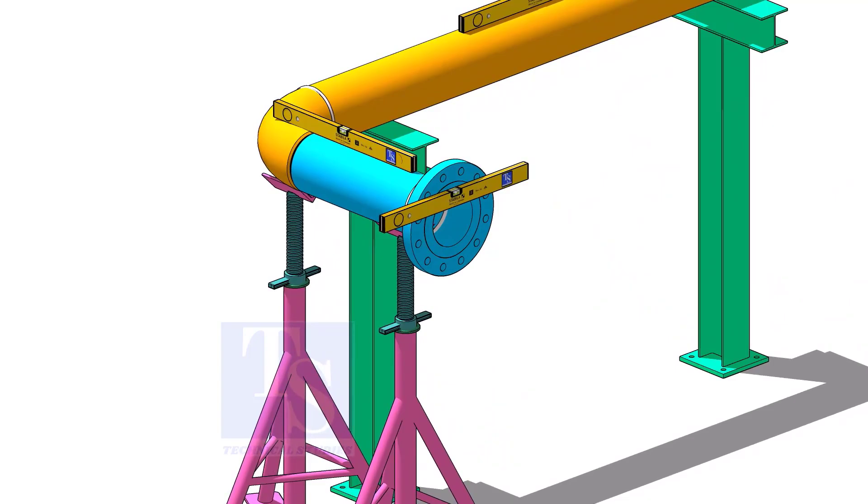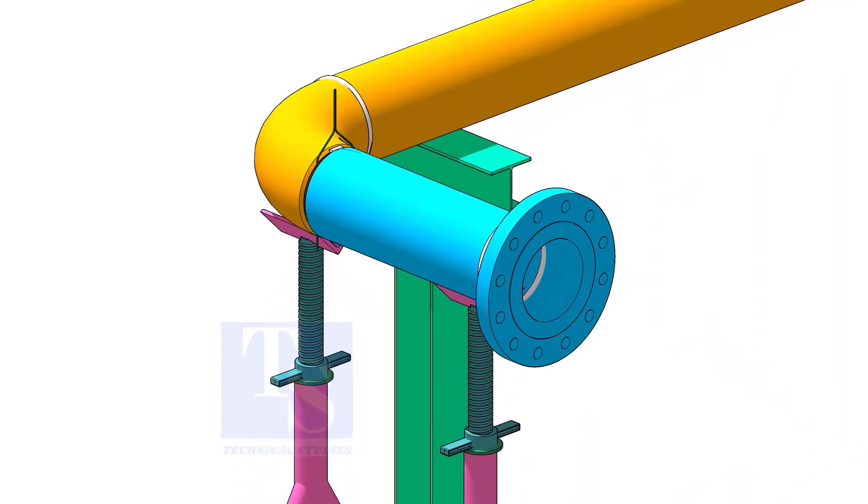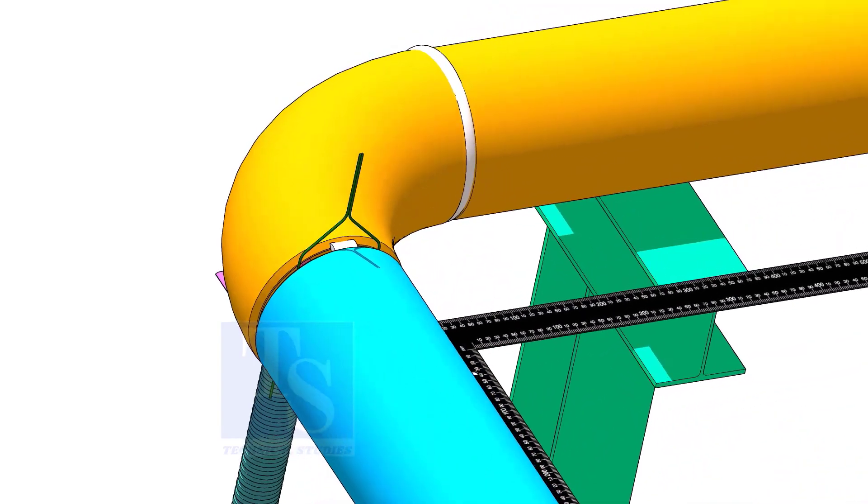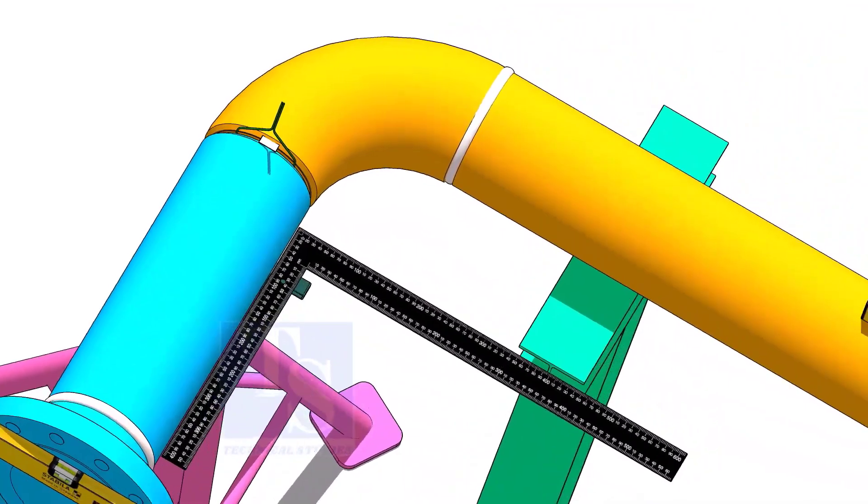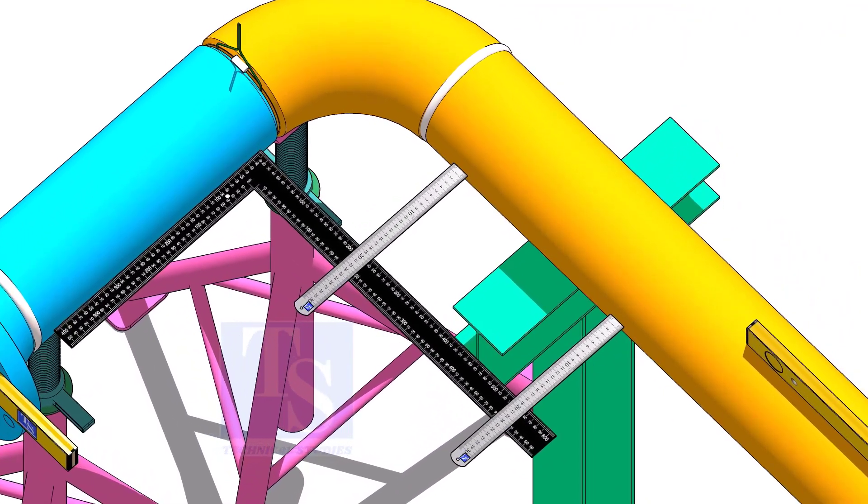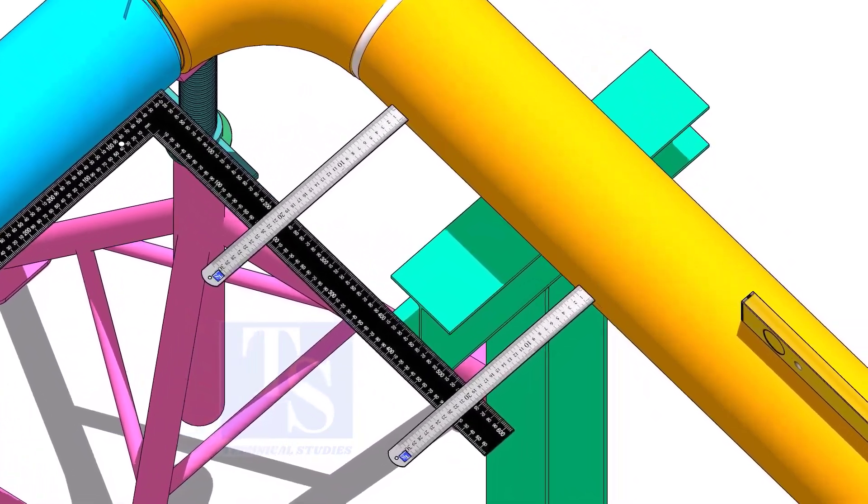Tack weld on the top and bottom side of the joint. Correct the squareness of the spools, as shown, and tack weld on the sides of the joint.